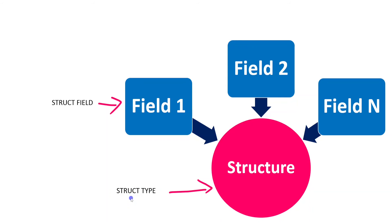StructType is a collection of StructFields. Coming to StructField, it defines one particular column within that data structure. In the complete structure with three columns — employee ID, employee name, and employee department — defining each individual field, say employee ID, is done through StructField. So StructField defines one particular field in the row, while StructType defines the complete structure. That is the difference between StructType and StructField.